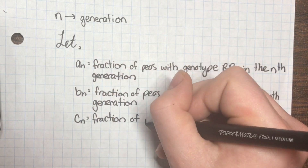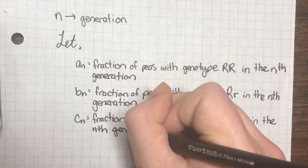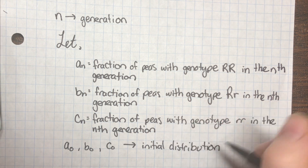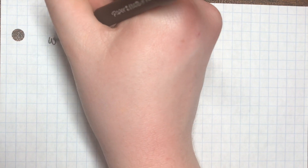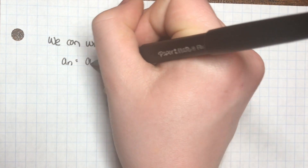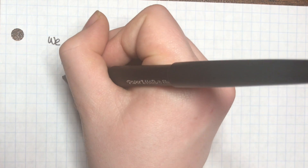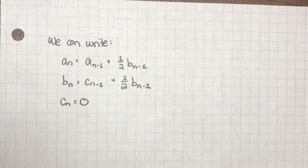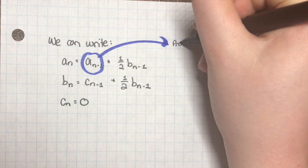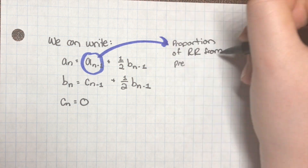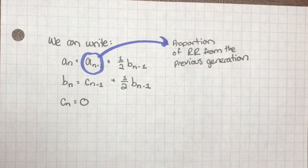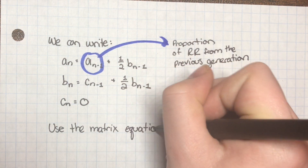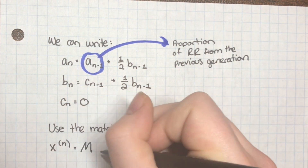Let c_n be the fraction of peas with genotype rr in the nth generation. Therefore a₀, b₀, and c₀ are the initial distributions of the genotypes. Using these definitions and the table, we come up with three equations. For example, a_n equals a_{n-1} plus one-half b_{n-1} — meaning the probability of RR equals the probability we had RR in the previous generation plus one-half the probability we had Rr in the previous generation. We can use a matrix equation to rewrite these three equations as vectors.